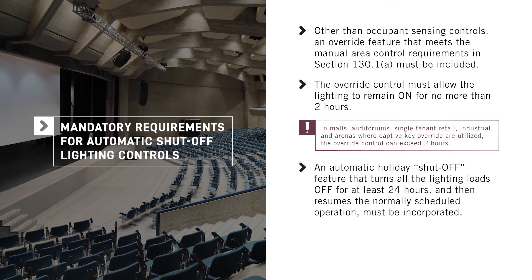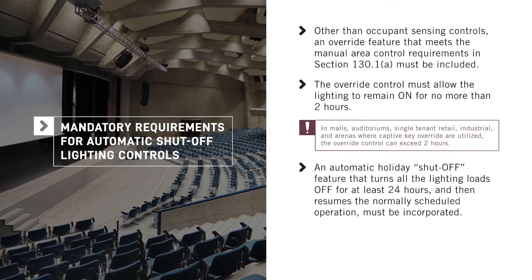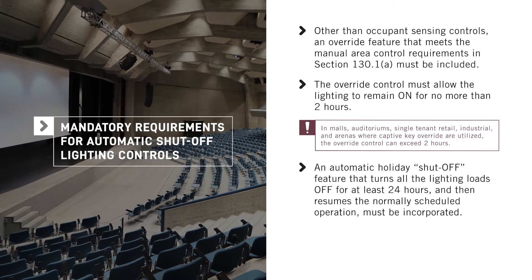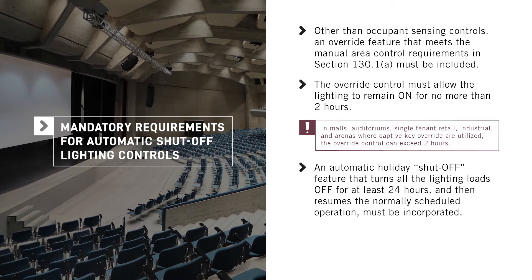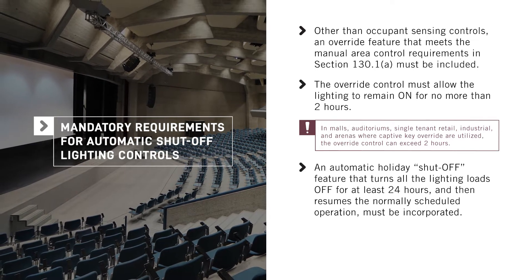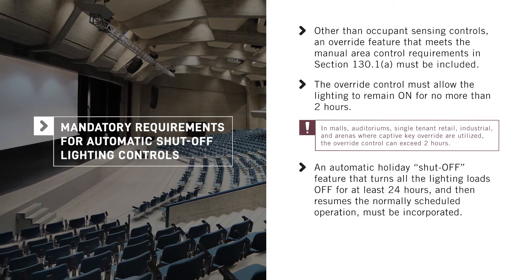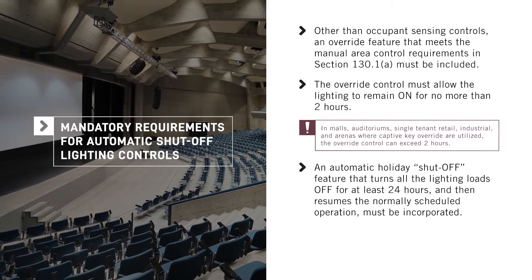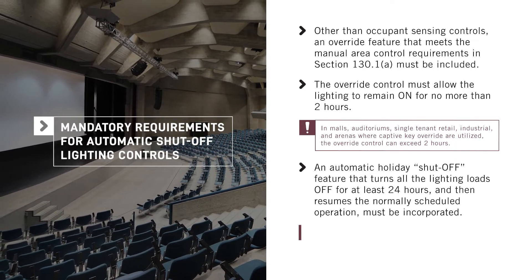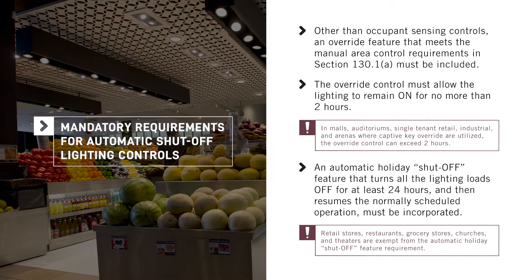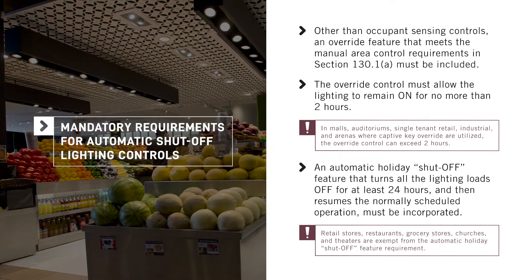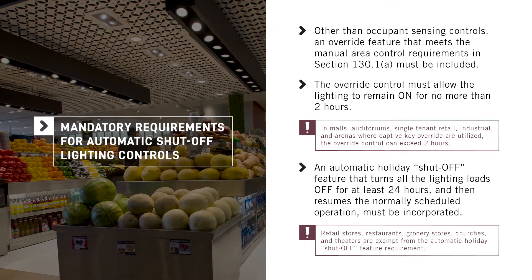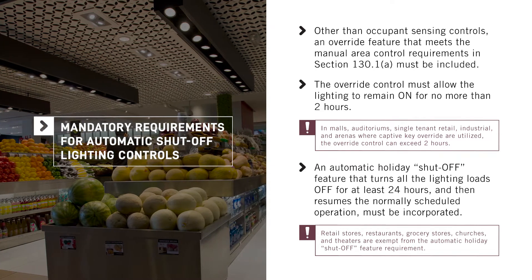Automatic time switch controls must also incorporate an automatic holiday shutoff feature that turns all lighting loads off for at least 24 hours and then resumes the normally scheduled operation. This feature is not required for retail stores, restaurants, grocery stores, churches, and theaters.